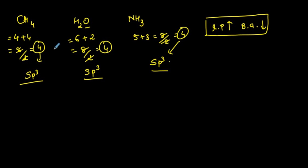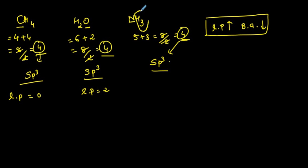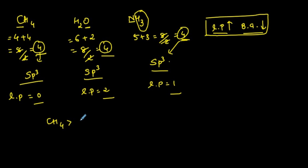In CH4, the number of groups is 4, central element is carbon, and lone pairs are 0. In H2O, the number of groups is 4, central element is oxygen, with 2 other elements attached, so lone pairs are 2. In NH3, number of groups is 4, central element is nitrogen, with 3 elements attached, so lone pair is 1. Therefore bond angle is highest in CH4, then NH3, then H2O.